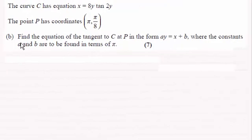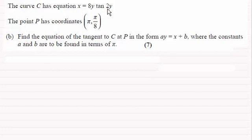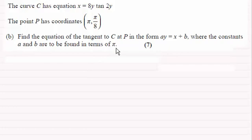For this part we've got to find the equation of the tangent to the curve C at the point P, in the form Ay equals x plus B, where the constants A and B are to be found in terms of pi.